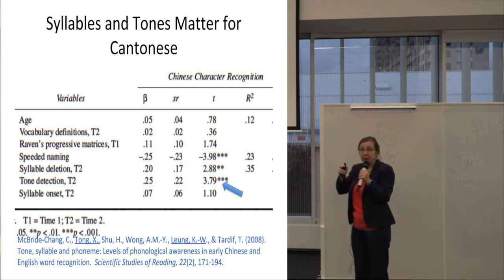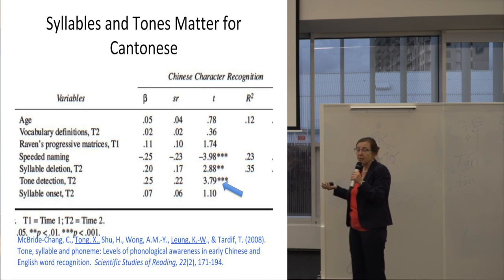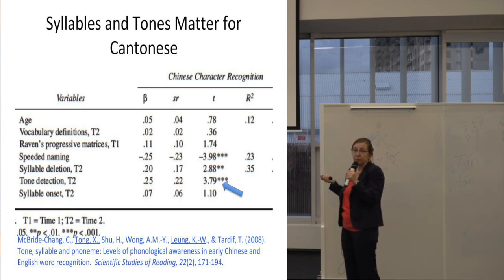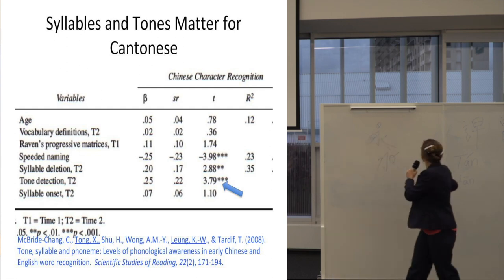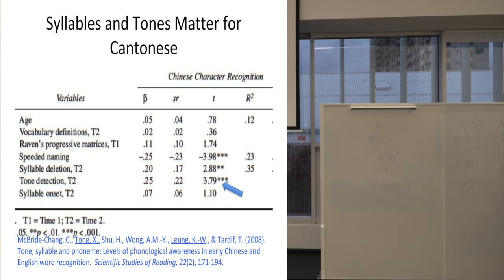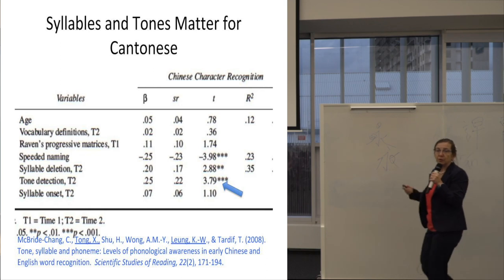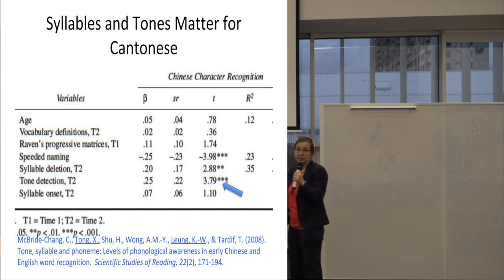Speeded naming — being able to name the pictures — is by some people considered to be a measure of phonological awareness. Syllable deletion: Tan-xia-ling. Say my name without the xia. Can anybody do it? Tan-ling. If you say my name without the xia or without the tan — that predicts reading in Cantonese, as does tone detection.